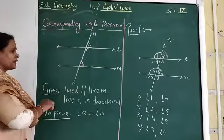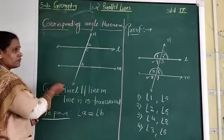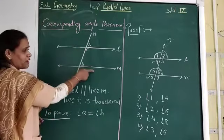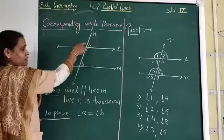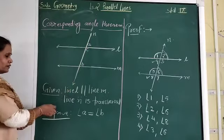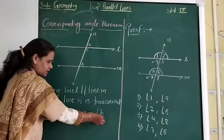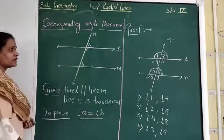In this theorem, the theorem says that, what is the given thing over here? Line L is parallel to line M. There is a transversal which is line N. And we have to prove angle A is congruent to angle B.